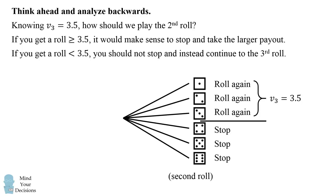Now if we stop, we would get the value of that roll. So we would either get a 4, 5, or 6 with equal chance. So the average when we stop will be the average of 4, 5, and 6, which is 5.